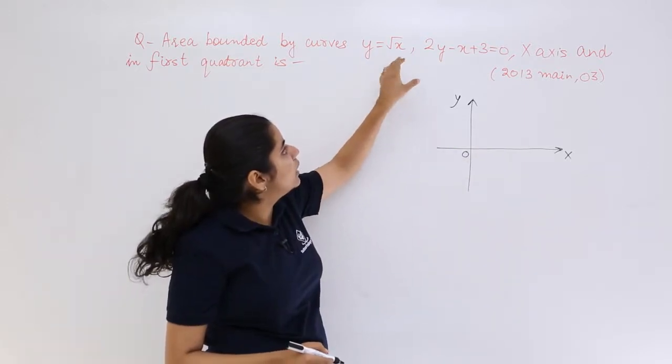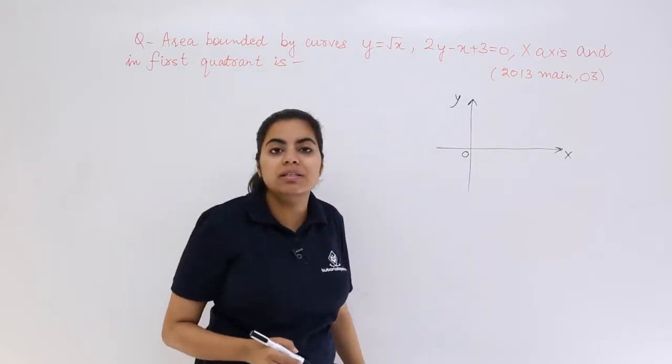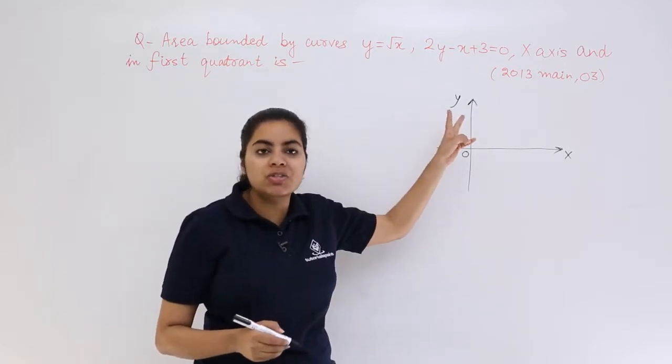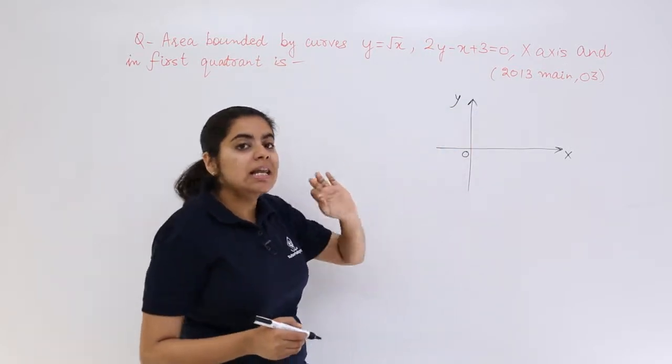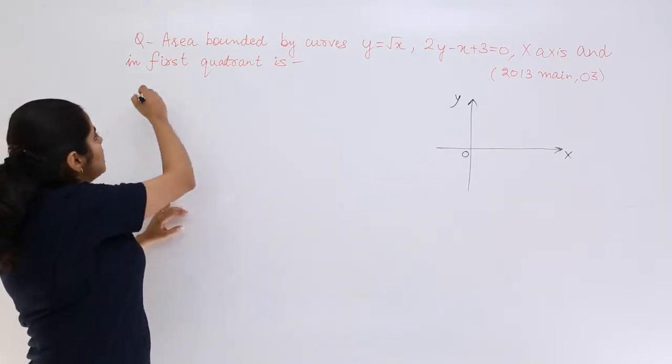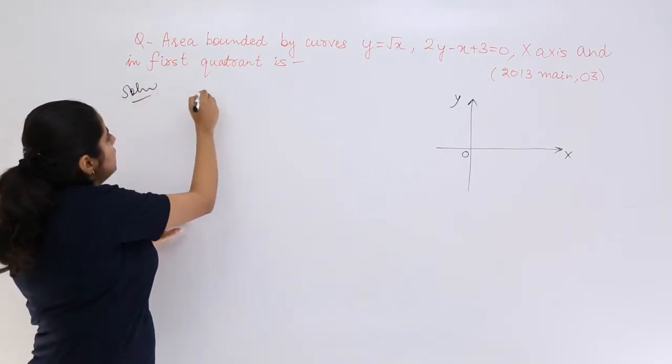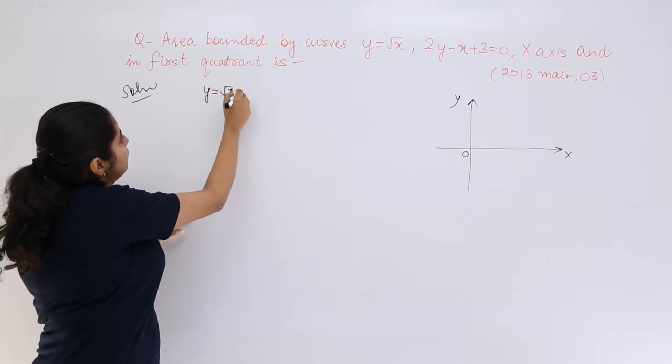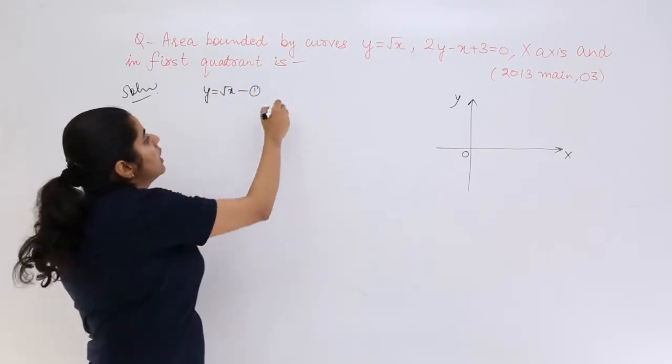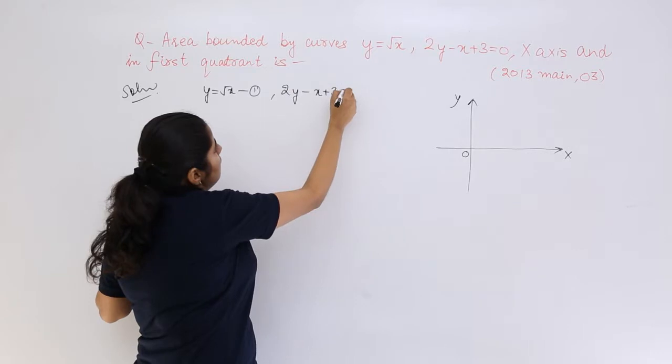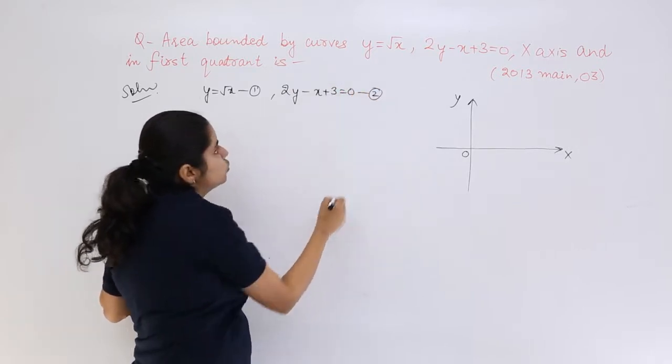Now y equals square root x, 2y minus x plus 3 equals 0 - two equations, two unknowns y and x. Let's solve for them. So if my y equals square root x is equation number 1, if 2y minus x plus 3 equals 0 is equation number 2.